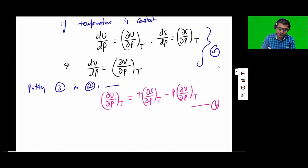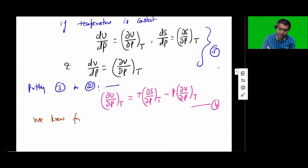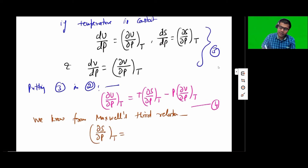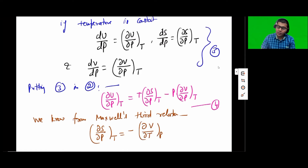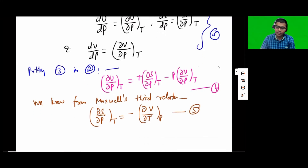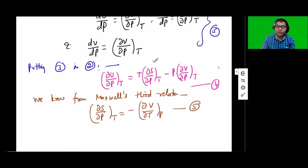Now we know Maxwell's third relation. From Maxwell's third relation, we can write that del S over del P at constant T is actually equal to negative of del V over del T at constant P. Let's say this is equation 5, so I can substitute equation 5 into equation 4, because we have del S over del P at constant T sitting there in equation 4.